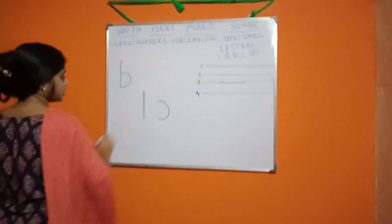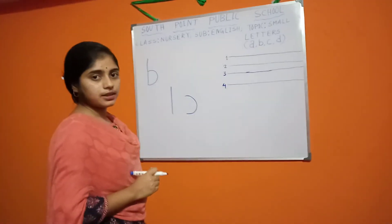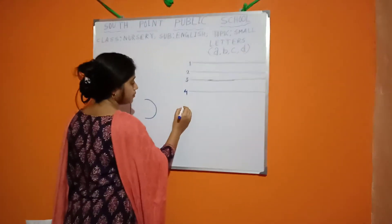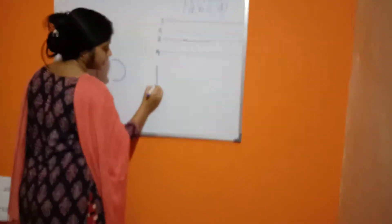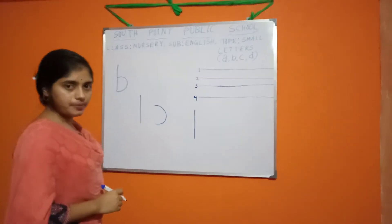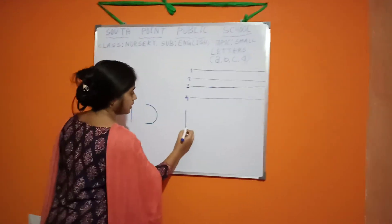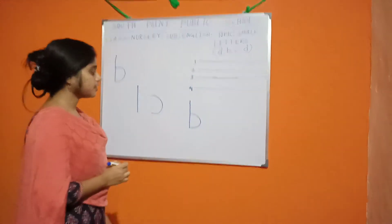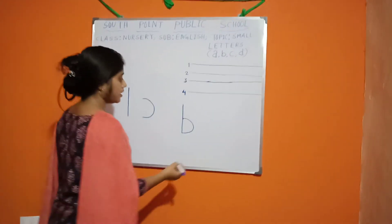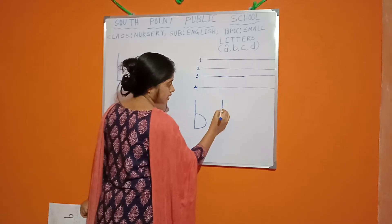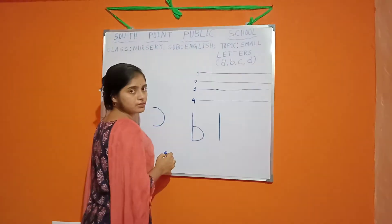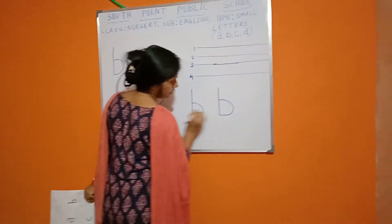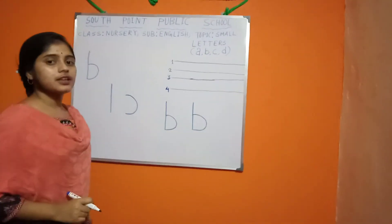Through this line we can write B. At first you have to draw the standing line, then the curved line. This is B. At first you have to draw the standing line, then the curved line. This is B.